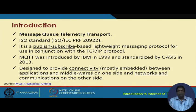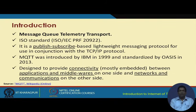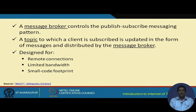MQTT was standardized in 2013 by OASIS, which is a standardization organization. This protocol does a couple of things: one is offering connectivity between different embedded devices, between the applications and the middleware of one device, and the networks and communication on the other side. So we have connectivity between applications and middleware on one side and networks and communication on the other — this is what MQTT does.